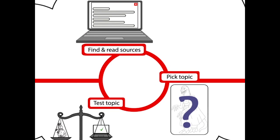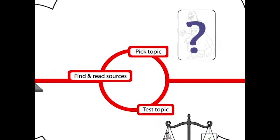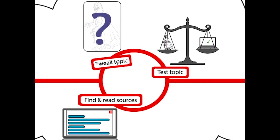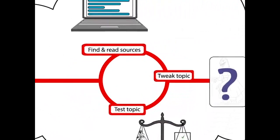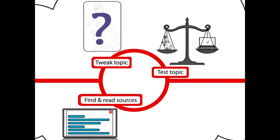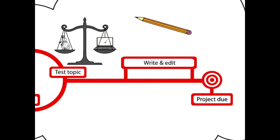At this point, you might find that the published research leads you away from your original topic. That's okay. You can let the research you find guide you and tweak your topic a bit. And by the time you've gone through this cycle a few times, you may find that you have enough sources to start writing and editing your paper.